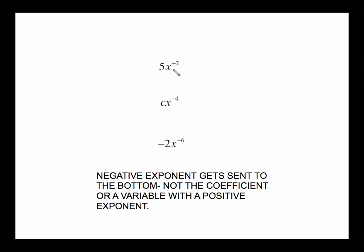You need to be careful when there are coefficients. This negative 2 exponent is only applying to the x. That 5 does not need to be sent anywhere — the 5 stays in the top, and the x squared goes to the bottom. This is really 5 times x to the negative 2, which is 5 times 1 over x squared, and it's the 5 times the 1 that gives you the 5. The easy way to think about it: the negative exponent gets sent to the bottom, not the coefficient.